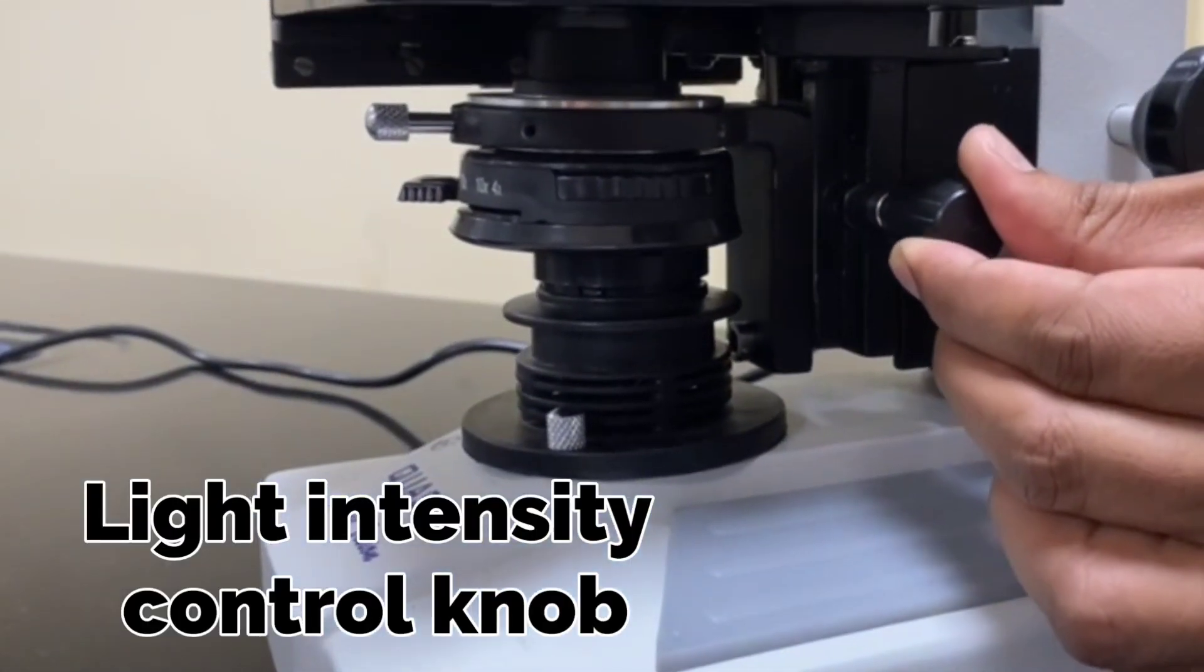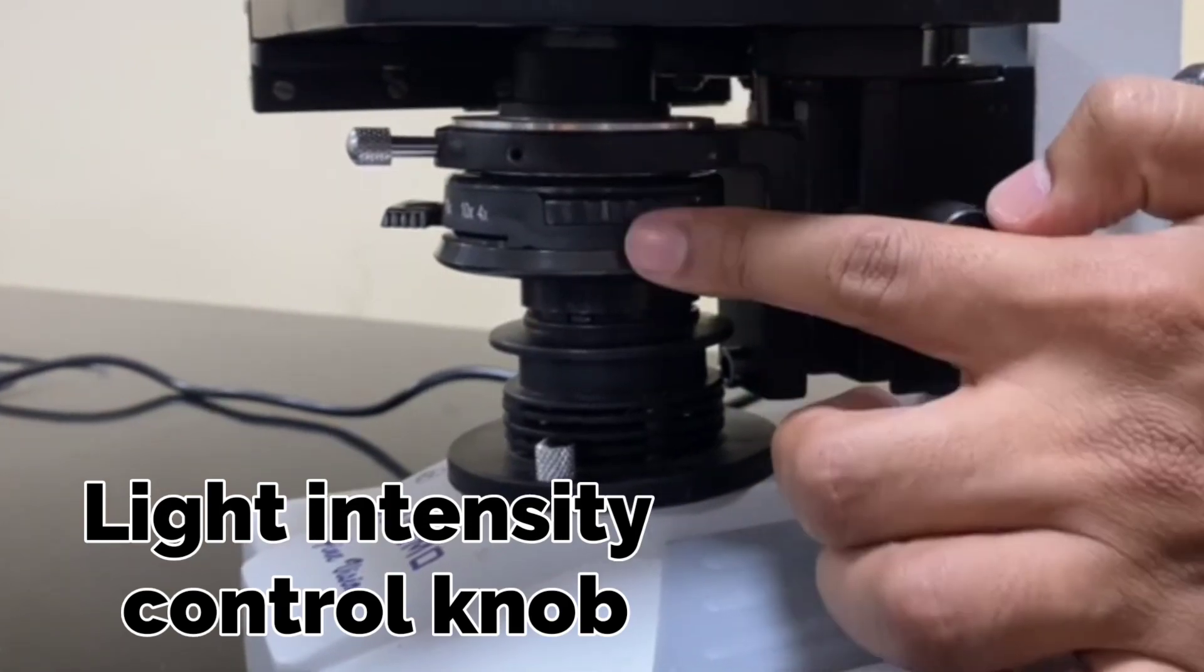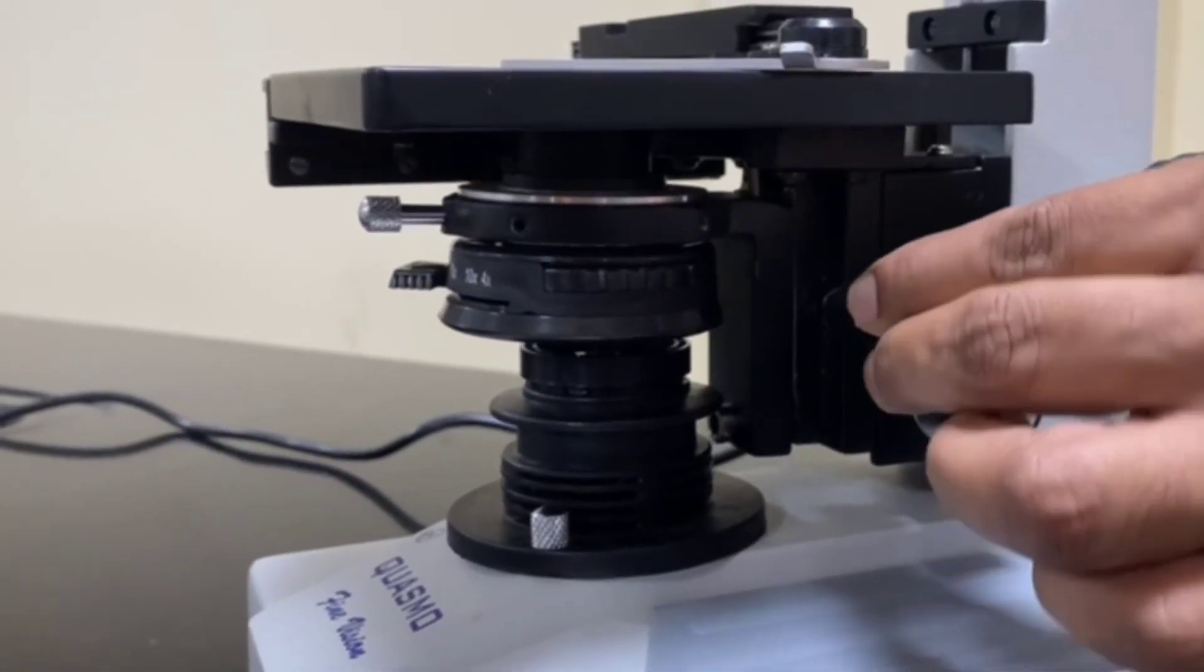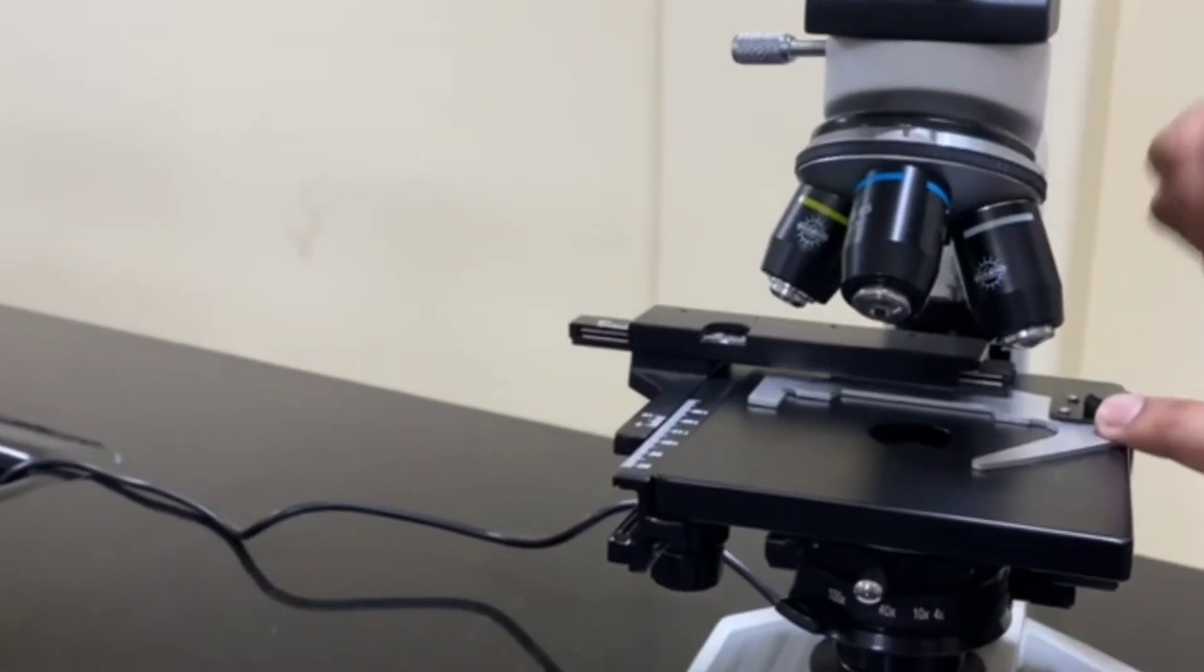Now this light intensity control knob can be used to move the diaphragm up and down and you can control the intensity of light from here also. Now come to this portion of the compound microscope.